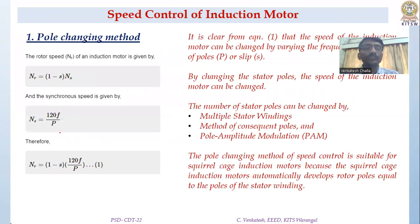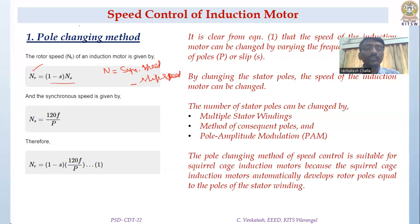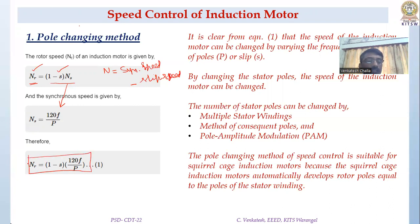The first method is the pole changing method. The rotor speed n equals (1 − s) × ns, where synchronous speed ns is given by 120f/P. So the total speed equation shows that rotor speed depends on number of poles. If the number of poles is increased, the speed will decrease. So if we can design the motor where a change of poles is possible, we can achieve different speeds.